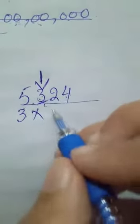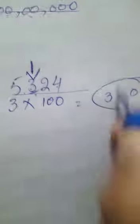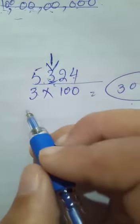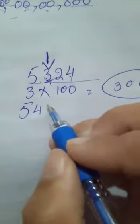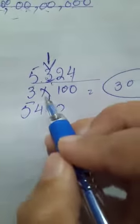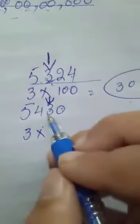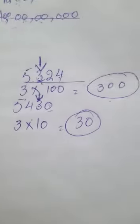Tens, hundreds place — you have to multiply by 100. So three's place value is 300. For example, here 5, 4, 3, 0 — you need the place value of 3. Three is in the tens place, so you multiply 3 by 10 and the place value is 30. Next we will do expanded form, which you have done in Class 5.